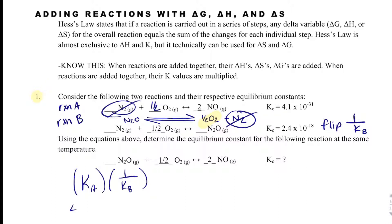This is going to end up being 4.1 times 10 to the minus 31 from KA, times 1 divided by 2.4 times 10 to the minus 18. The math I get here is 1.71 times 10 to the minus 13, and so this is a non-spontaneous process because K is less than 1. That is review.